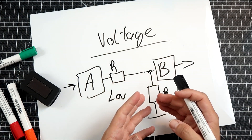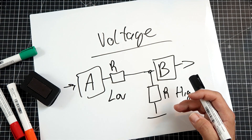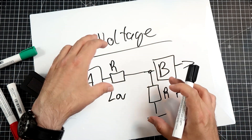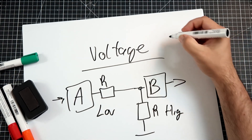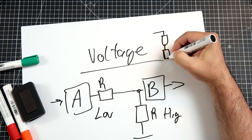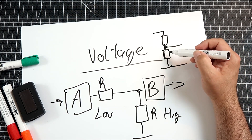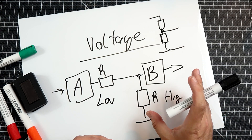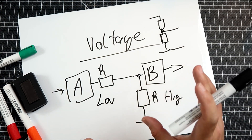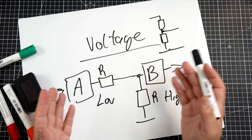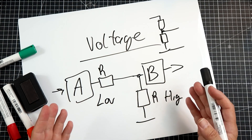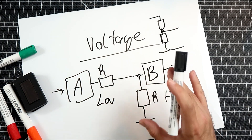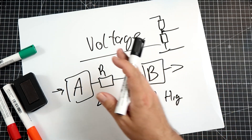A low output impedance means we get a lot of voltage with a small current. A high input impedance means we do not drain much voltage. This works like a voltage divider — the higher the input resistance, the less voltage we lose. Because of the high input impedance on the receiver device, we get a lot of voltage, and it works perfectly for audio applications. As long as the output impedance is low and the input impedance is high, we get high voltage with a decent amount of power.